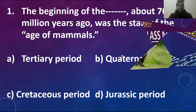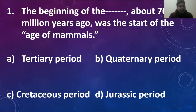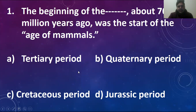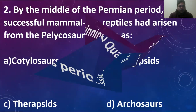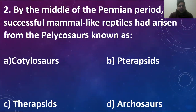The first MCQ: the beginning of the blank about 70 million years ago was the start of the age of mammals. What was the time period when the age of mammals started? It was about 70 million years ago. Either this one belongs to the Tertiary period, Quaternary period, Cretaceous period, or Jurassic period. The right answer is Tertiary period, because the Tertiary period was the age of origin, or the start of the age of mammals when mammals became abundant. So the first MCQ has answer A.